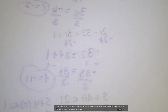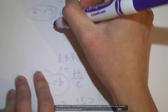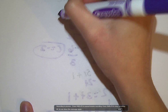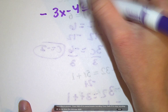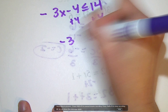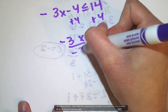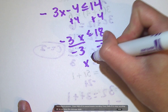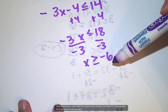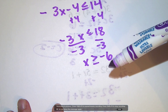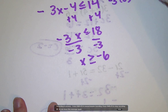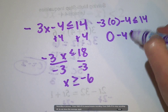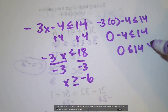We're going to go ahead and do the 3 problems in QuickCheck 1. The first one was negative 3x minus 4 is less than or equal to 14. I would add 4 to both sides, getting negative 3x is less than or equal to 18. I divide by negative 3 — since I divided by a negative, I have to flip the sign — so x has to be greater than or equal to negative 6. Testing 0: negative 3 times 0 minus 4 is negative 4, and negative 4 is less than or equal to 14. Yes, so we know we did it correctly.